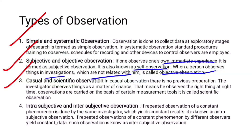Next, casual and scientific observation. In casual observation, there is no previous preparation — the investigator observes things as a matter of chance, whenever he gets an opportunity, and collects data. In scientific observation, observations are carried out on the basis of certain measurement tools — that is scientific observation.